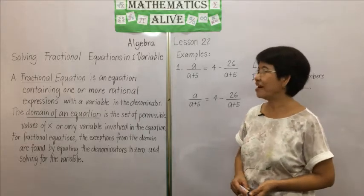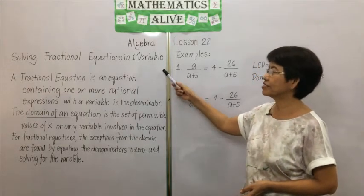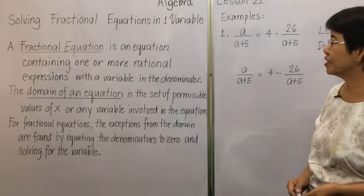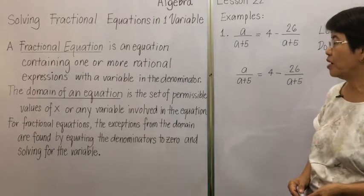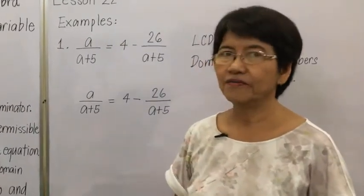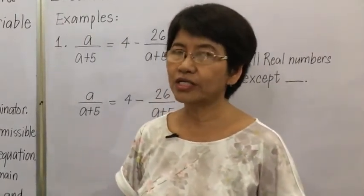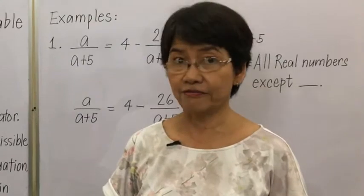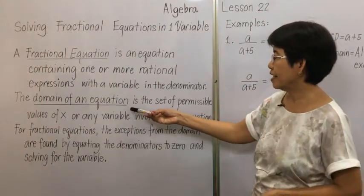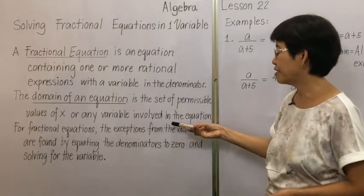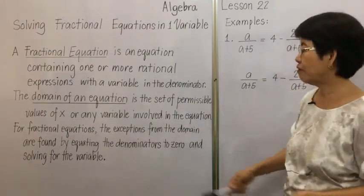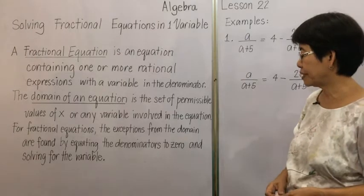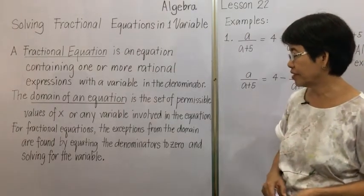Welcome to Mathematics Alive, Algebra Lesson 22: Solving Fractional Equations in One Variable. A fractional equation is an equation containing one or more rational expressions with a variable in the denominator. For linear equations, the domain — the set of permissible values of the variable — is the set of real numbers. For fractional equations, the exceptions from the domain are found by equating the denominators to zero and solving for the variable.